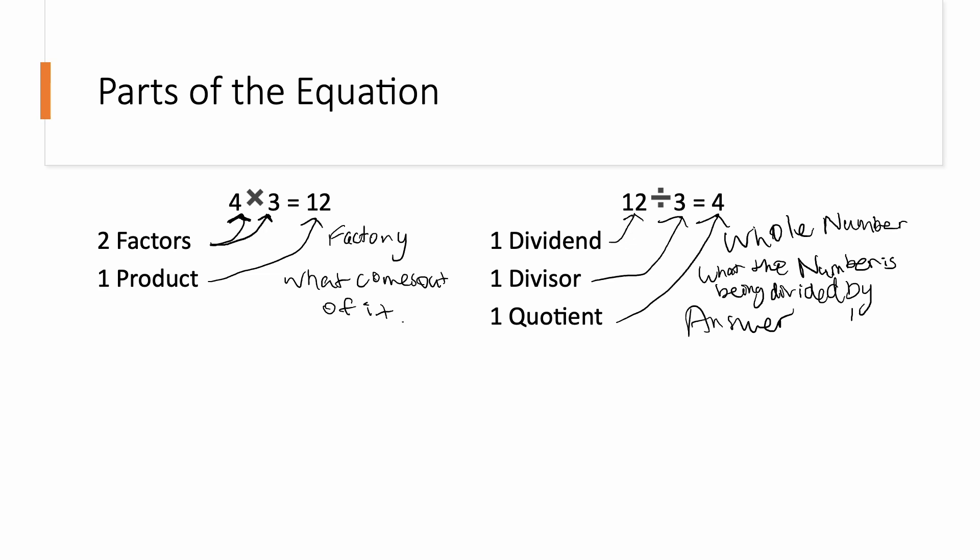For division, the first number is the dividend. The second number is the divisor. And the last one is called the quotient.